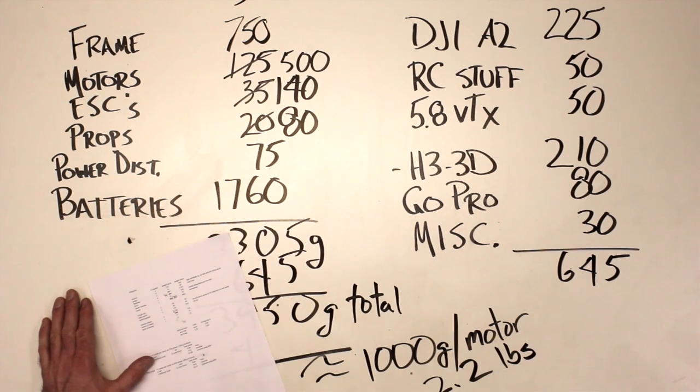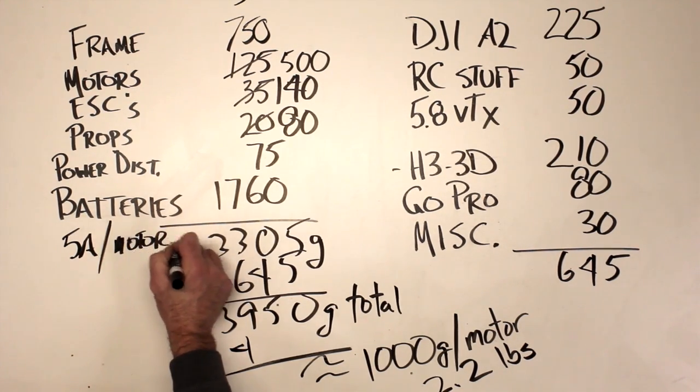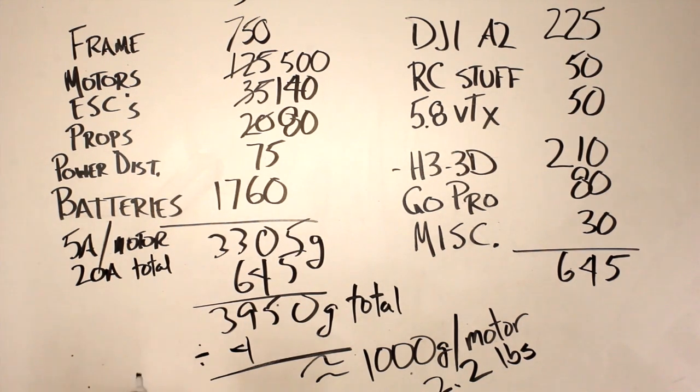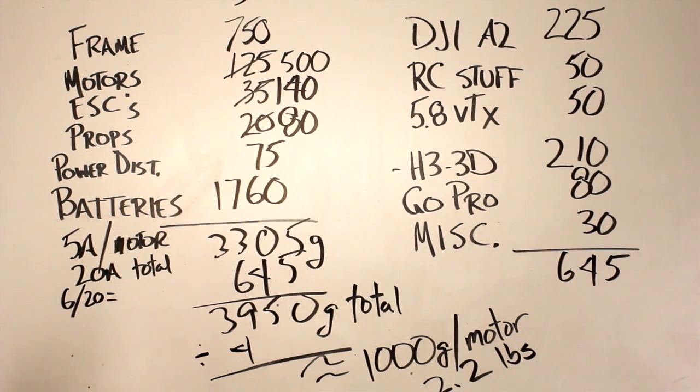And that's going to be 4.7 amps per motor. So even if I look at it, if I call it 5 amps per motor, right, let me go over here, 5 amps per motor, that is going to be 20 amps total, okay, 20 amps total.